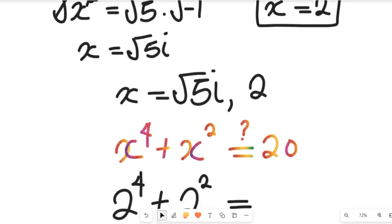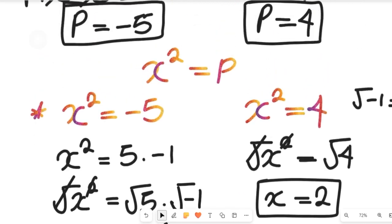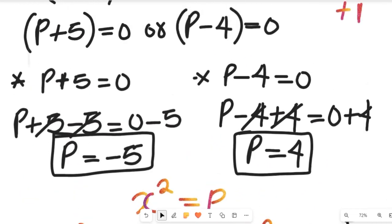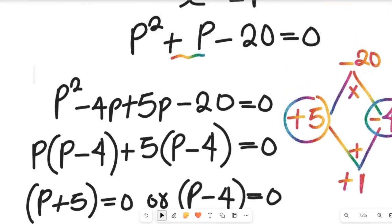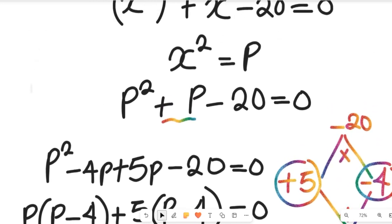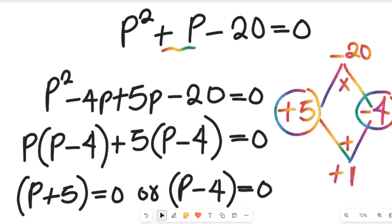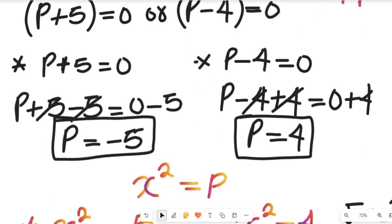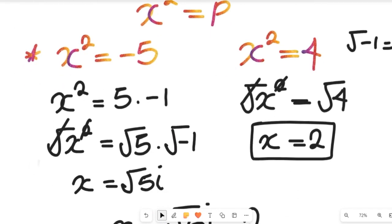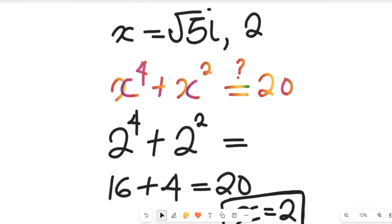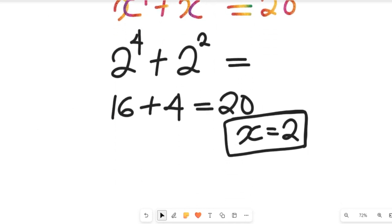The other solution, negative 5 imaginary, is an imaginary solution that also satisfies the exponential equation given. I know you enjoyed watching this video. Don't forget to give it a thumbs up, share it with friends and colleagues, and remember to subscribe to my channel for more simplified mathematics solutions. Thanks so much for watching, and bye-bye for now.